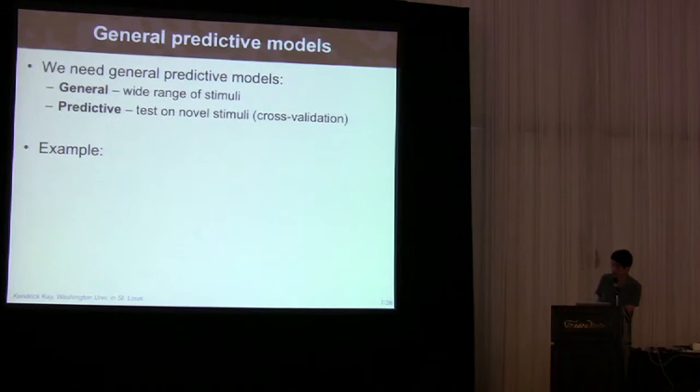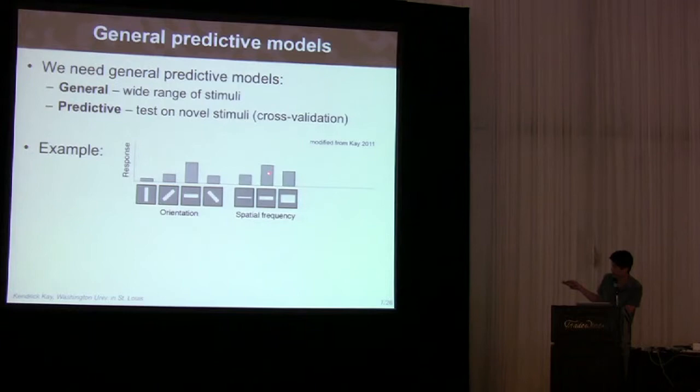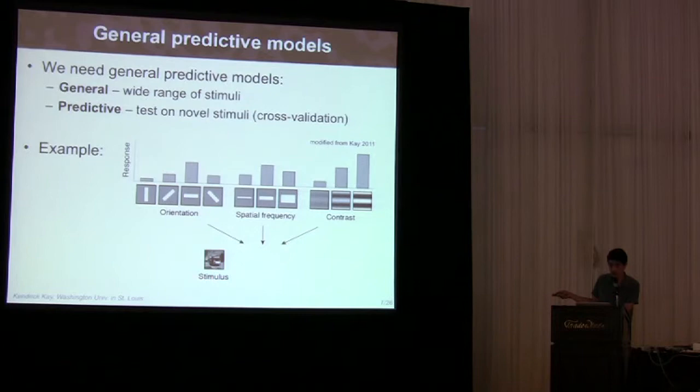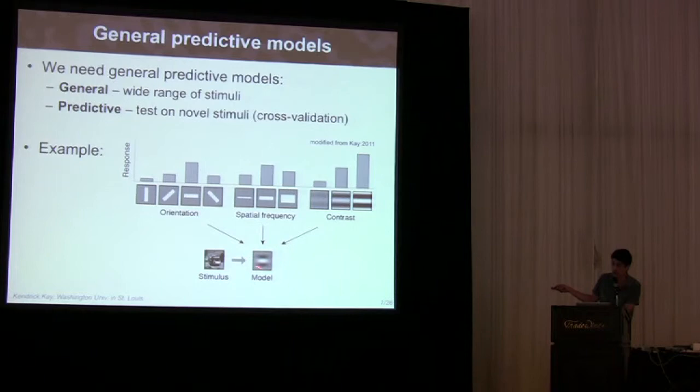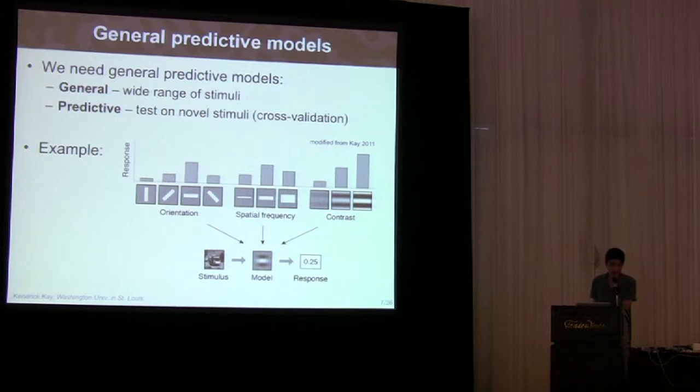Let's look at a simple example. I think the canonical example is the linear filter model of simple cells in V1. Here's a little schematic. We're recording from a simple cell, and we might observe some responses. The question is, can we come up with a general model that can explain all of these observations? In fact, we can. We start with the stimulus. It's just a spatial pattern of light intensities. And we compute a weighted sum according to these weights, and that is our predicted response. The power of this model is its generality. If it's accurate, then it will predict not only each of these individual tuning curves, but also any other potential tuning curve you might wish to measure.